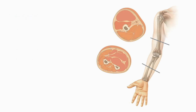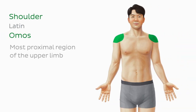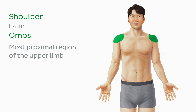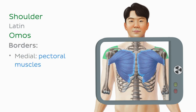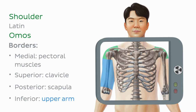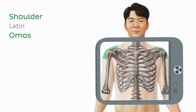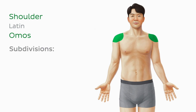Let's get started with the shoulder region. The shoulder is the most proximal region of the upper limb. Situated between the chest and the upper arm, the shoulder is bordered medially by the pectoral muscles of the chest, superiorly by the clavicle, posteriorly by the scapula, and inferiorly by the upper arm. The bony articulation of the humerus and the scapula forms one of the main contents of the shoulder — the glenohumeral, or shoulder joint. The shoulder also contains two important subdivisions: the deltoid region and the axillary region.